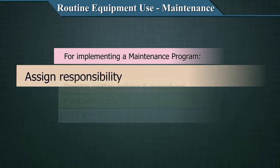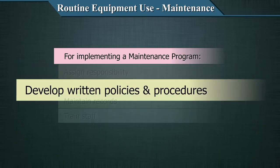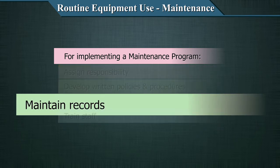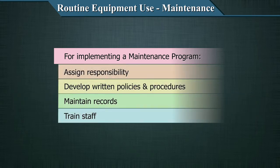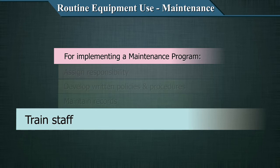Assigning responsibility: generally, the frontline staff responsibility is for the person who is authorized to do the work or his deputy. Periodic checking should be done by the quality manager or whoever has the appropriate authority. There should be written policies and procedures about who does what, up to what level, and how to escalate a process in case of breakdown. Records should be maintained for everything done, and staff should be trained to maintain records.